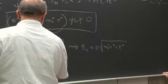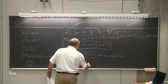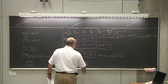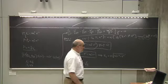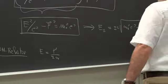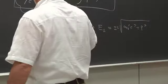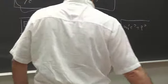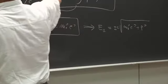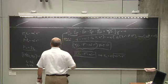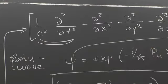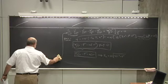In the non-relativistic case E = p²/2m — there is only one solution given a momentum. Here there are two, and the reason is that unlike the Schrödinger equation, the Klein-Gordon equation has a second derivative in time, while Schrödinger has only a first derivative. This is very important and is at the heart of the matter.